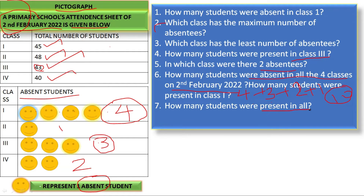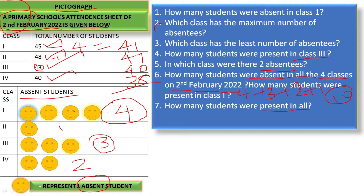How many students were present in all? In 1st standard, 4 students absent, so 41 students were present. In 2nd standard, 1 student absent, so 47 students present. In 3rd standard, 3 students absent, so 40 students present. In 4th standard, 2 students absent, so 38 students present. In total, 41 + 47 + 40 + 38 = 166 students were present on 2nd February 2022.